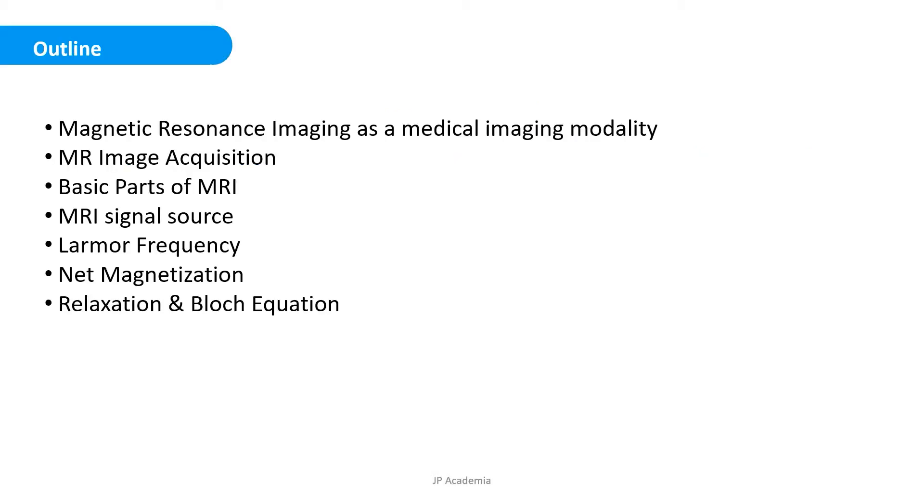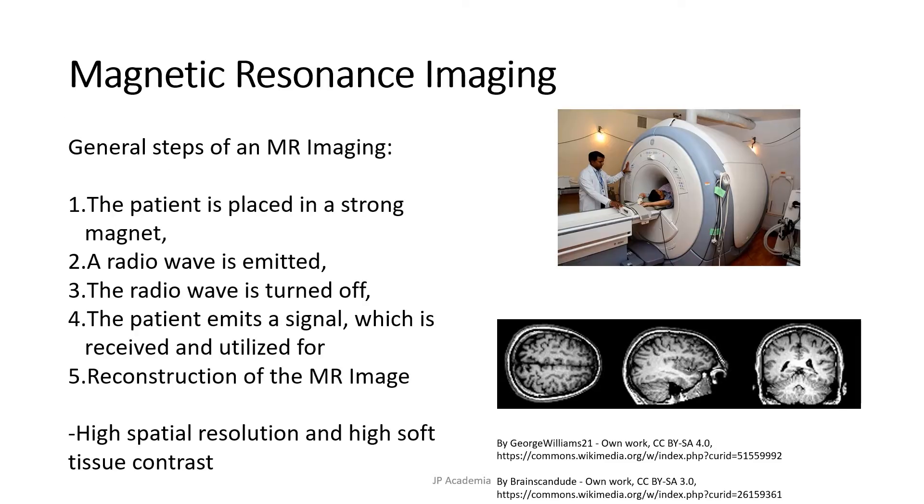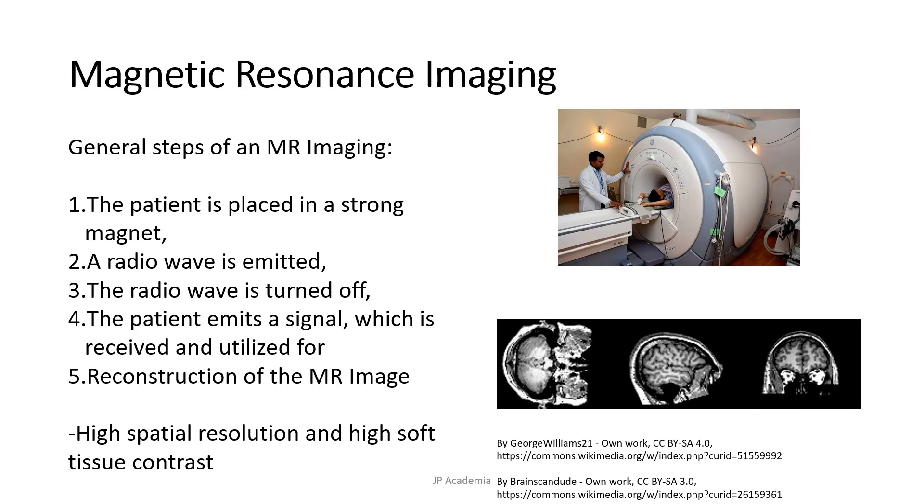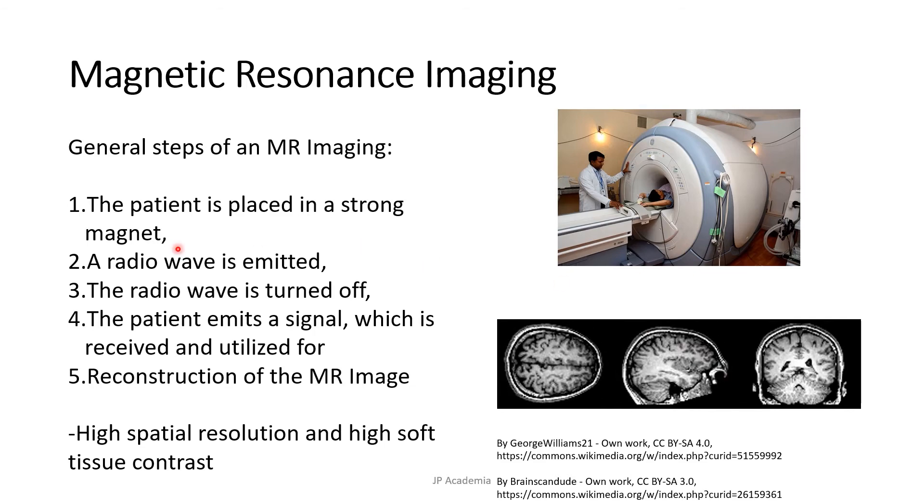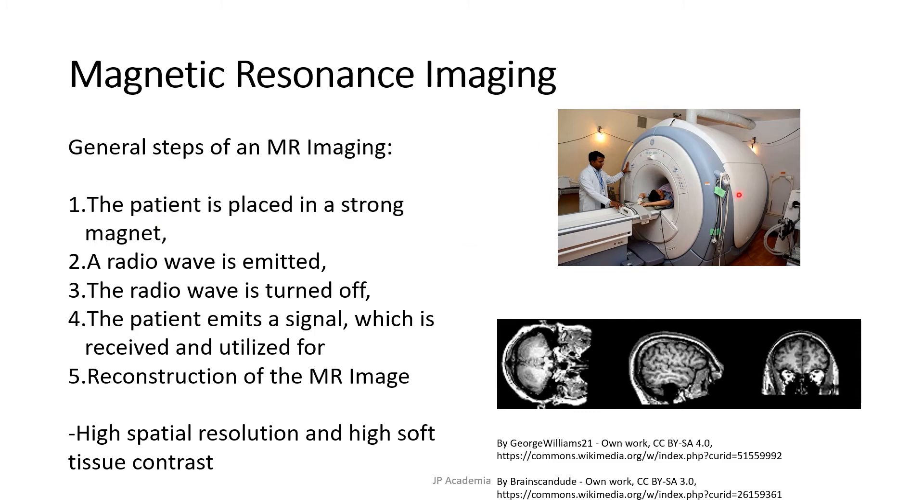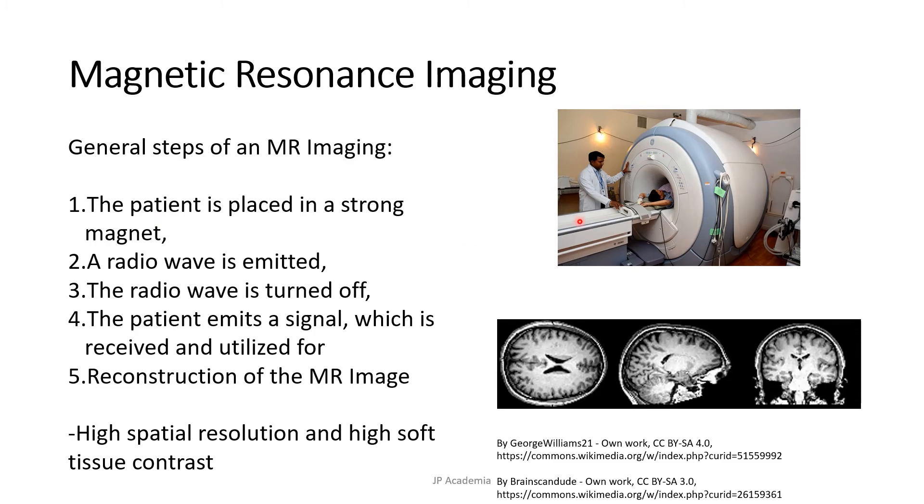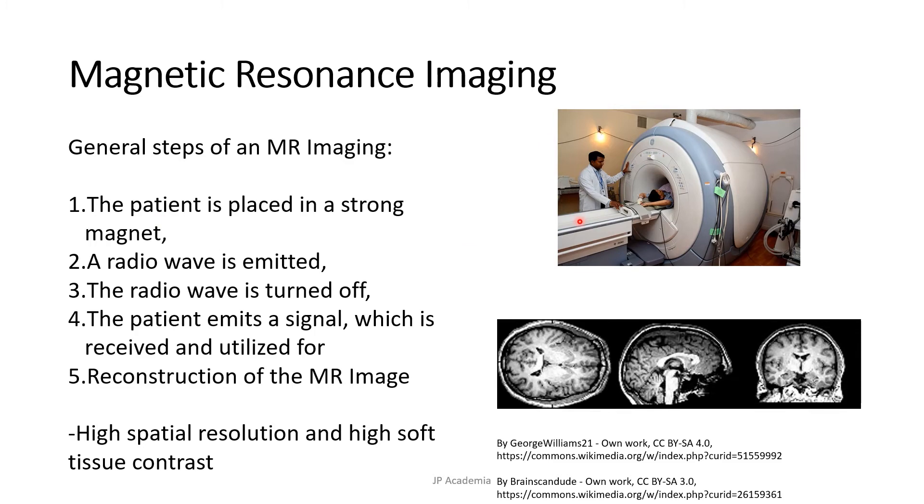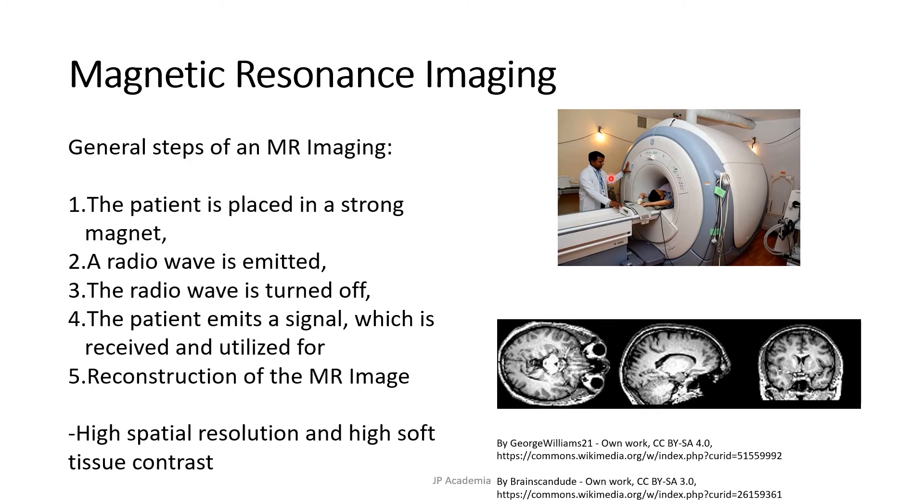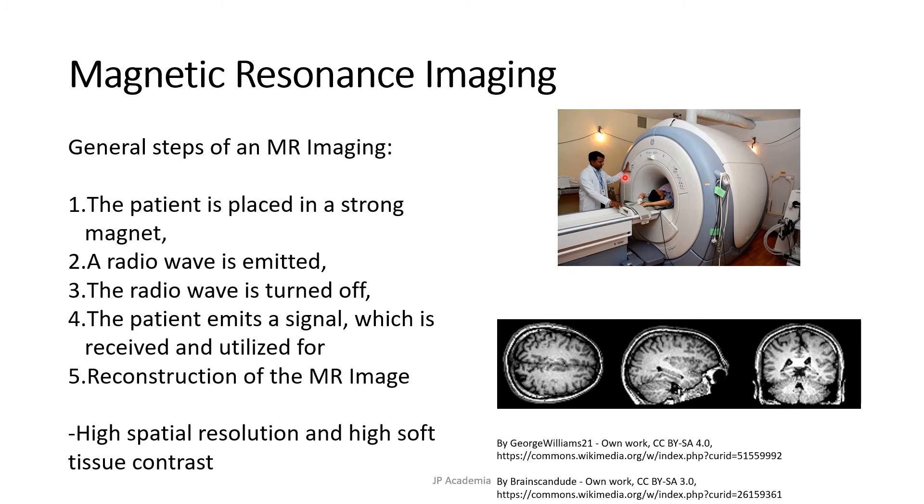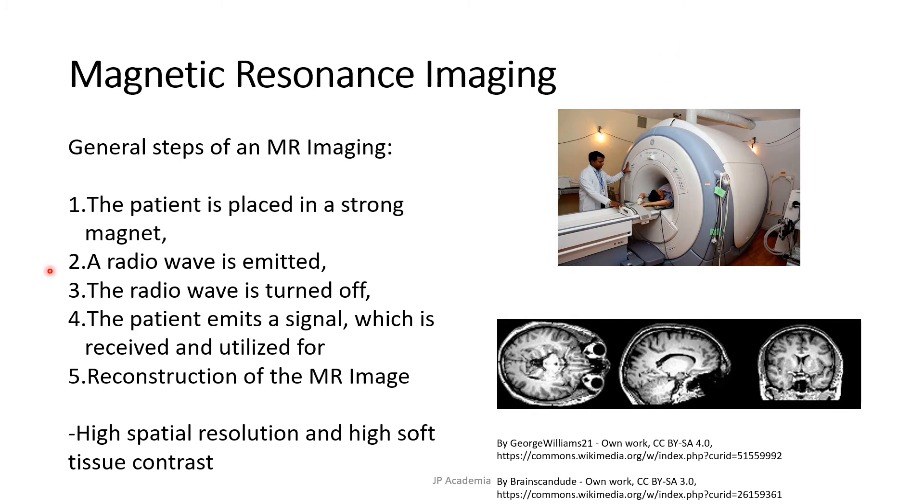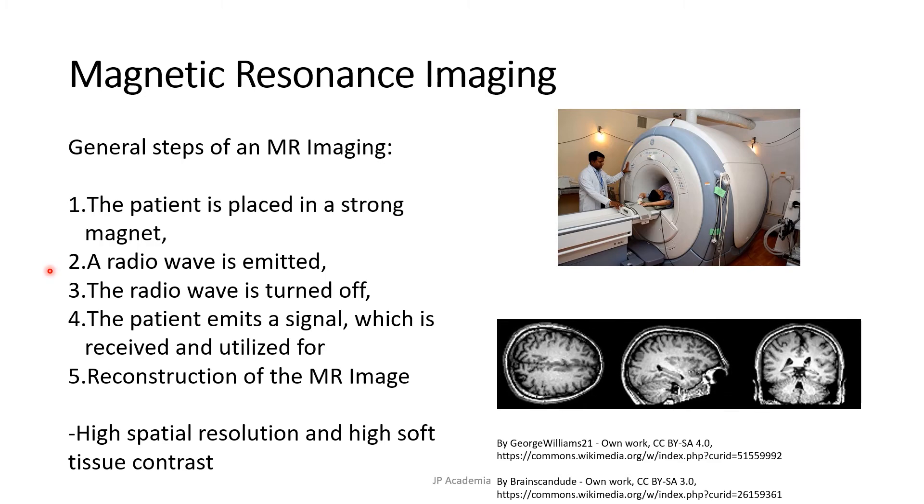This is the outline of this video lecture. We can generally describe an MR imaging procedure as follows. First, the patient's body is placed in a strong magnetic field and this causes the spin system or primarily the protons present in the patient's body to precess, or you can imagine this precess as the movement of a spinning top when it starts to wobble.